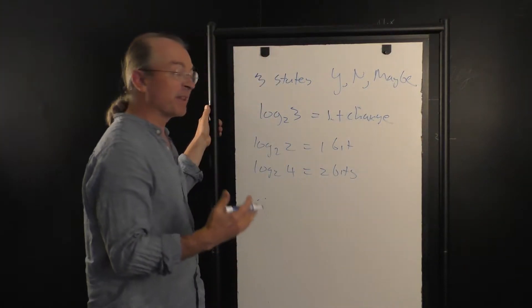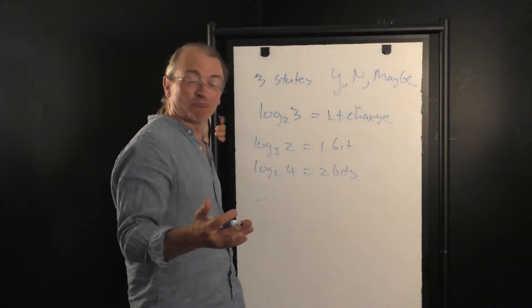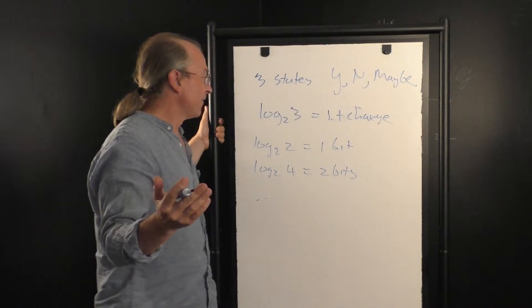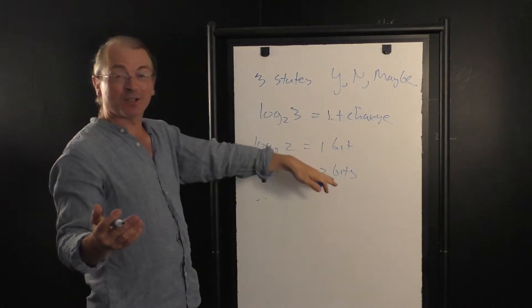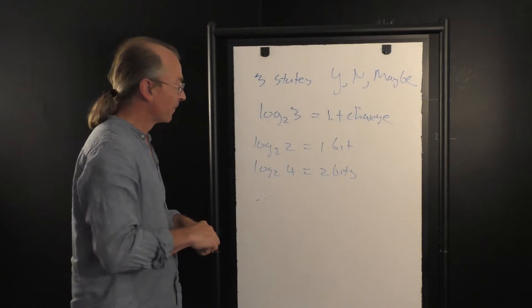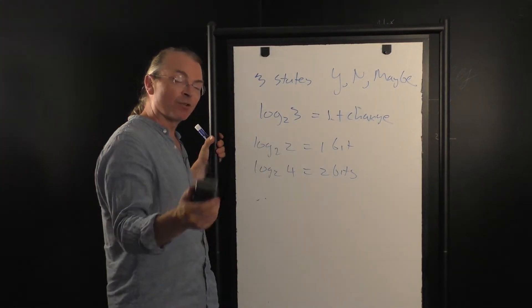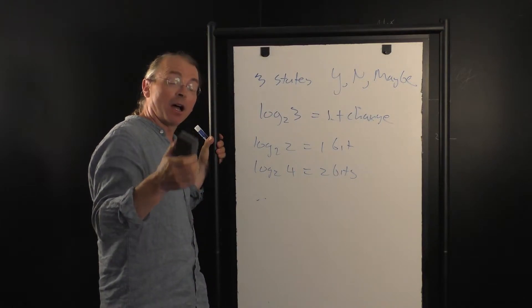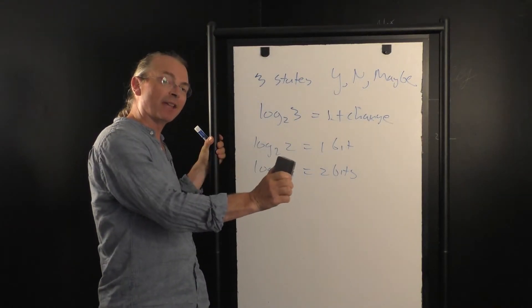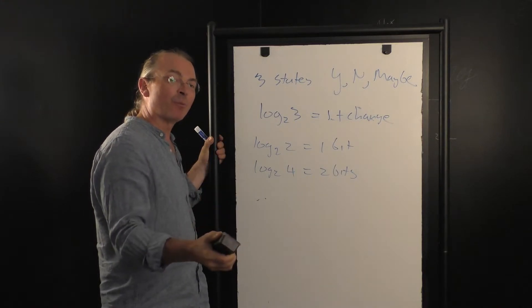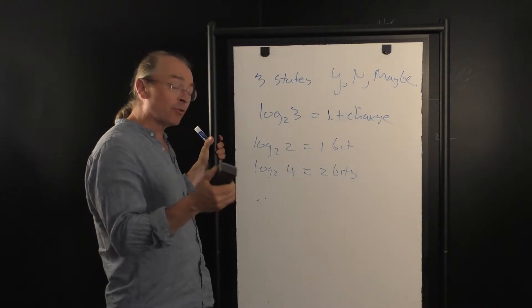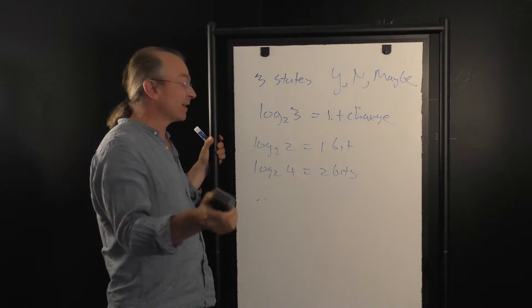So, something that has 3 different states, it's not binary, it's ternary, then it has a number of bits in between 1 and 2. And this observation that any physical system that has a different number of distinguishable states can register a certain amount of information was actually realized back in the